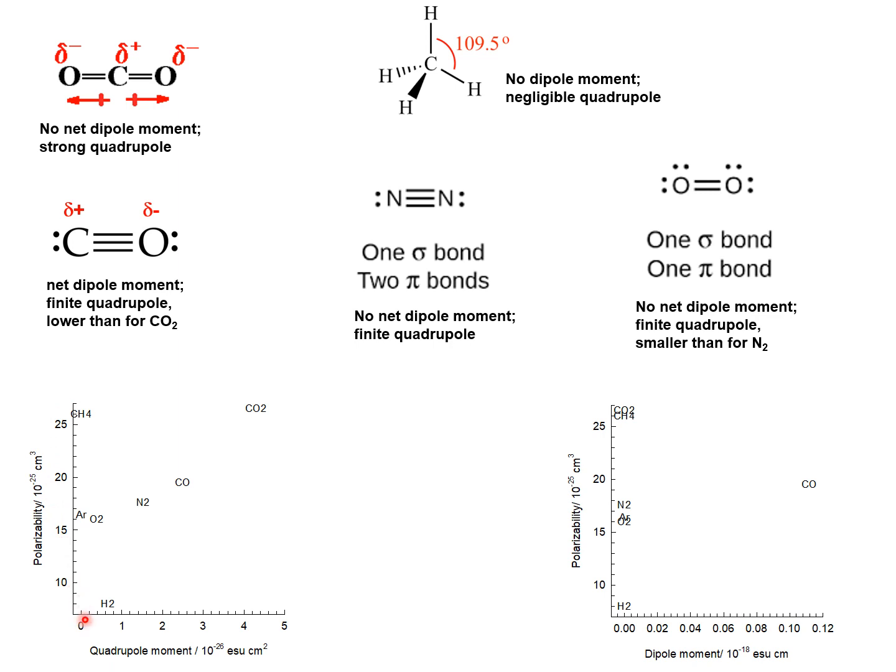Here I plot the polarizability versus the quadrupole moment and we note that the polarizability of methane is practically the same as that for carbon dioxide, but carbon dioxide has a significantly higher quadrupole moment.